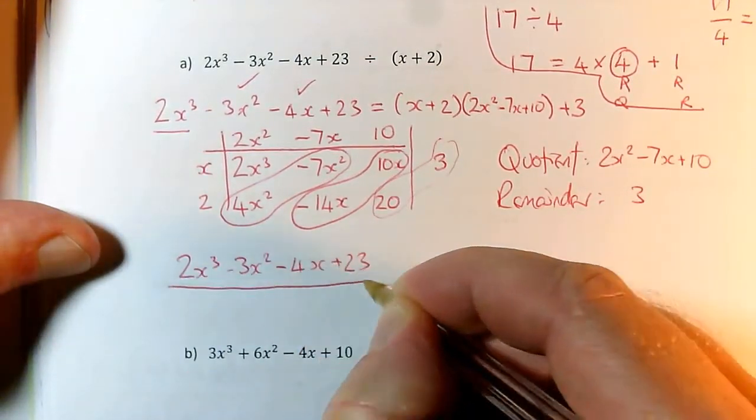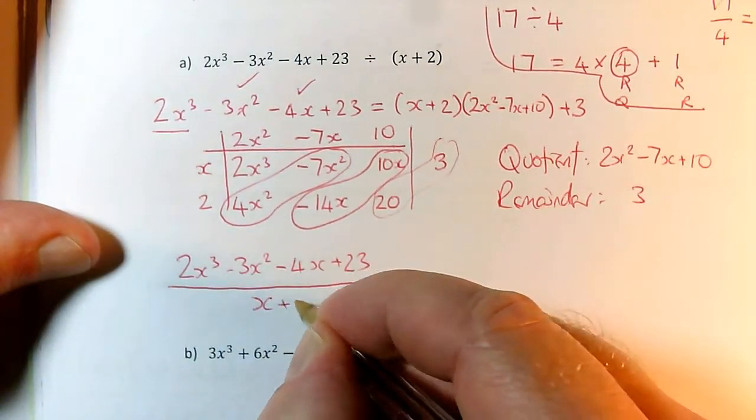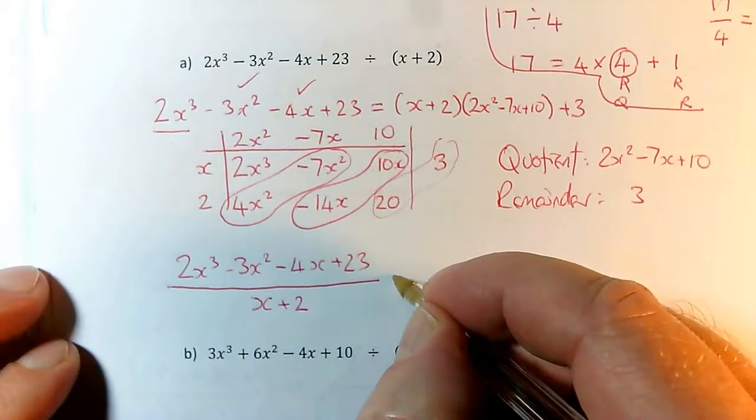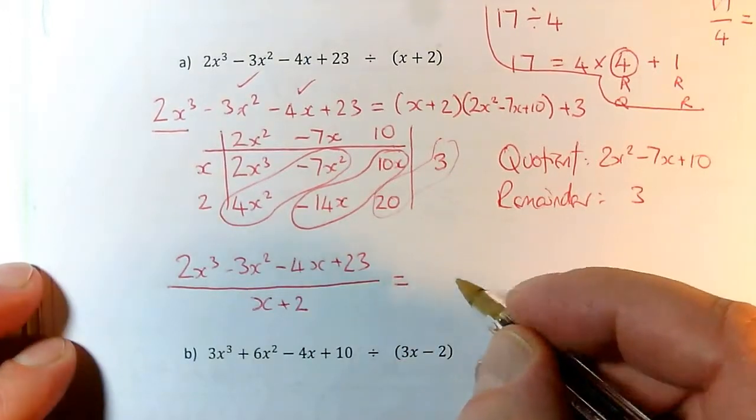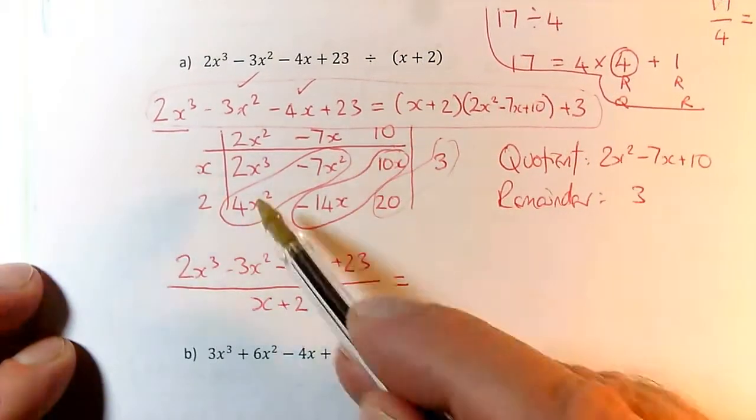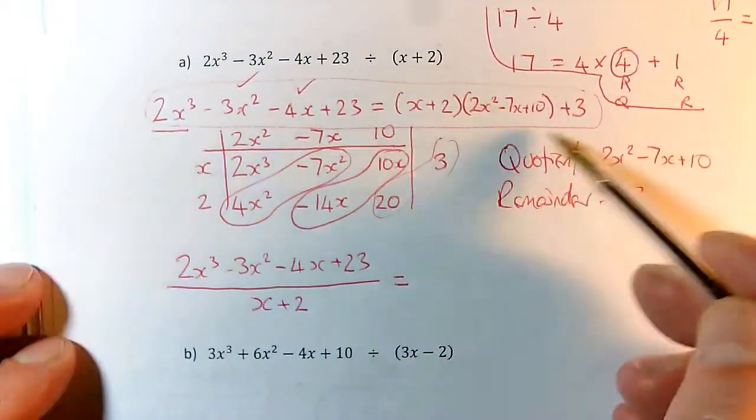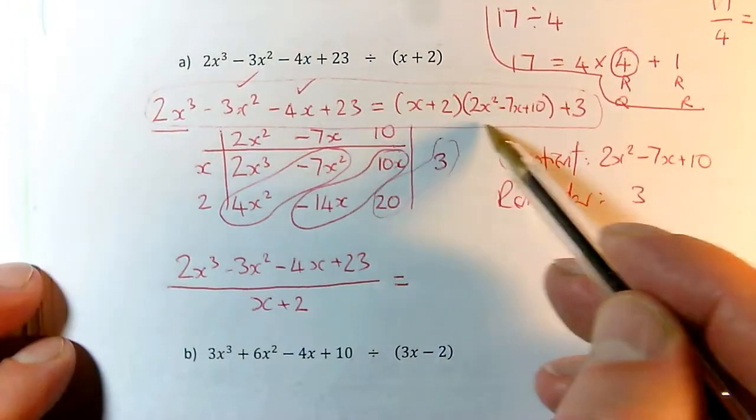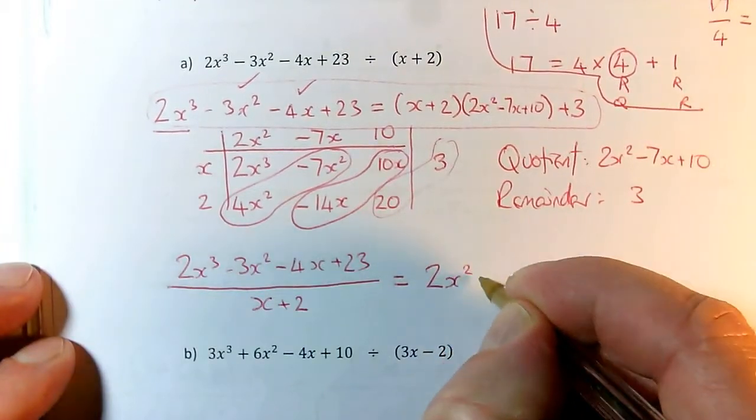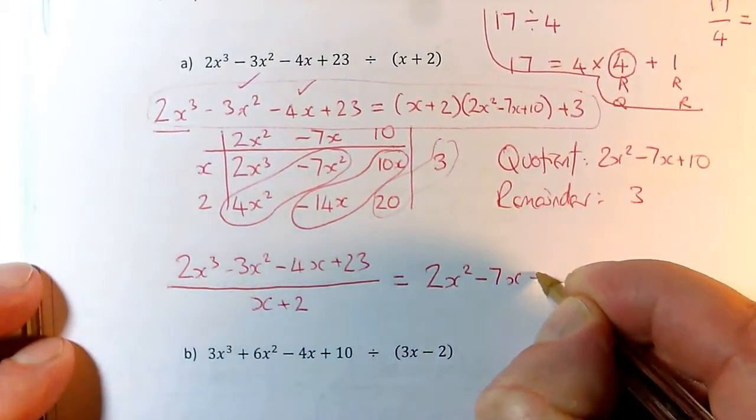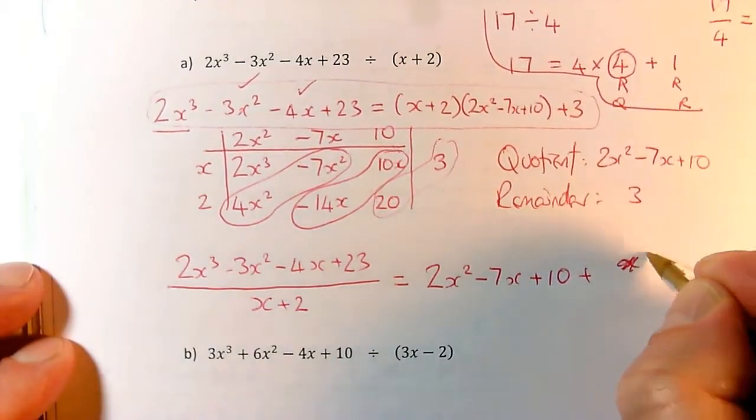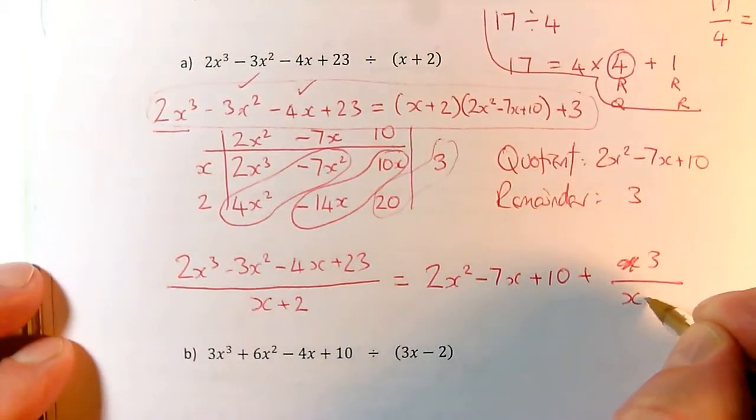2x³ - 3x² - 4x + 23, we're dividing by the x + 2. And the answer to that is, well, what I'm doing actually is I'm taking this expression here and I'm just dividing both sides by the x + 2. So when I divide this side by x + 2, dividing this bit by x + 2 is just going to cancel off the bracket of x + 2. So it's 2x² - 7x + 10. But when I divide the last bit by the x + 2, I end up with a fraction of 3 over x + 2.